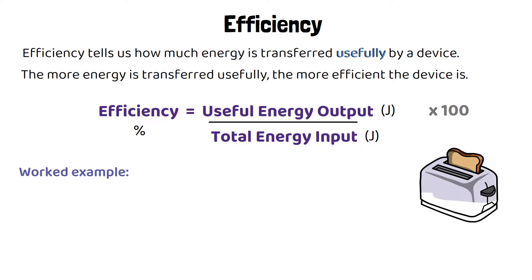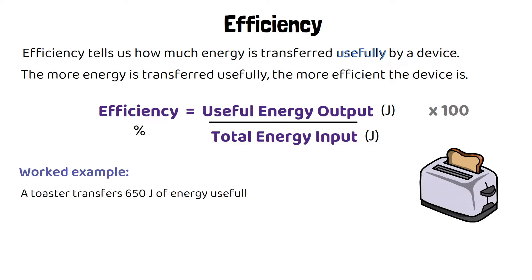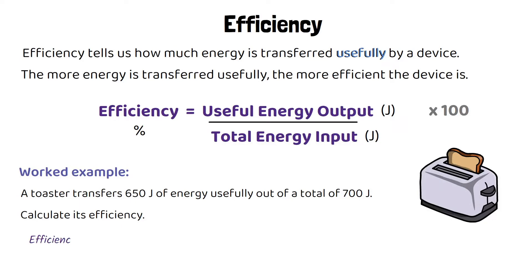Here's an example question calculating the efficiency of a toaster. A toaster transfers 650 joules of energy usefully out of a total of 700 joules. Calculate its efficiency. We're going to use the equation and substitute the values of energy given in the question.